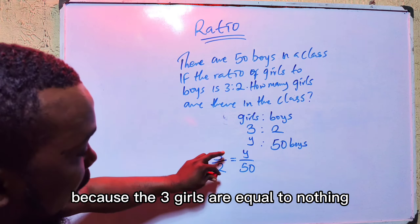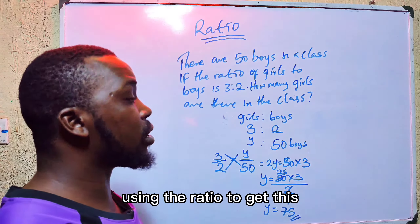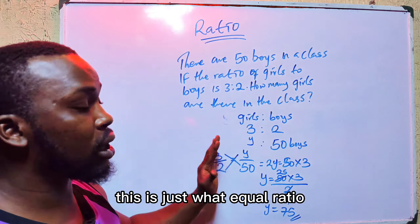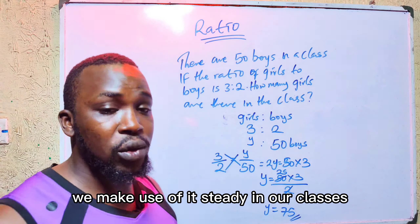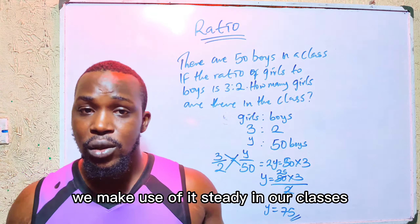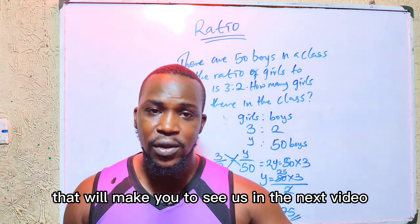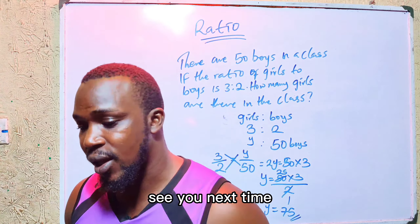Now let's talk about equal ratio. For example: 1 is to 2 is equal to 2 is to 4 — this is equal ratio. That's why sometimes we change it to a fraction: 1 over 2 equals 2 over 4, meaning the two sides are equal in the ratio.